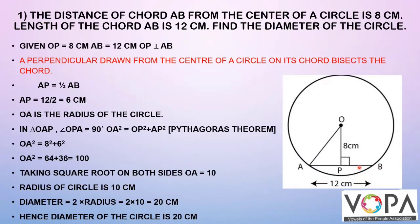Using the theorem — a perpendicular drawn from the center of a circle on its chord bisects the chord — the perpendicular bisects the chord into two equal parts. So AP equals PB. Since AB equals 12 cm, AP equals 12 divided by 2, which equals 6 cm.